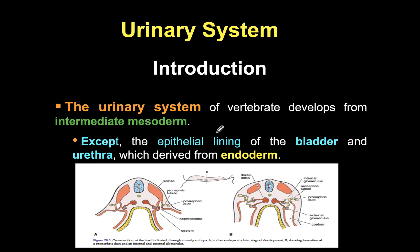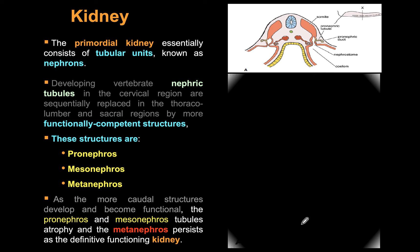The renal system develops from the intermediate mesoderm. All structures are derived from the mesoderm, except the lining of the bladder and urethra, which are derived from the endoderm. The paraxial, intermediate, and lateral mesoderm regions are distinct, and most of the epithelium and structures inside the renal system originate from the intermediate mesoderm.